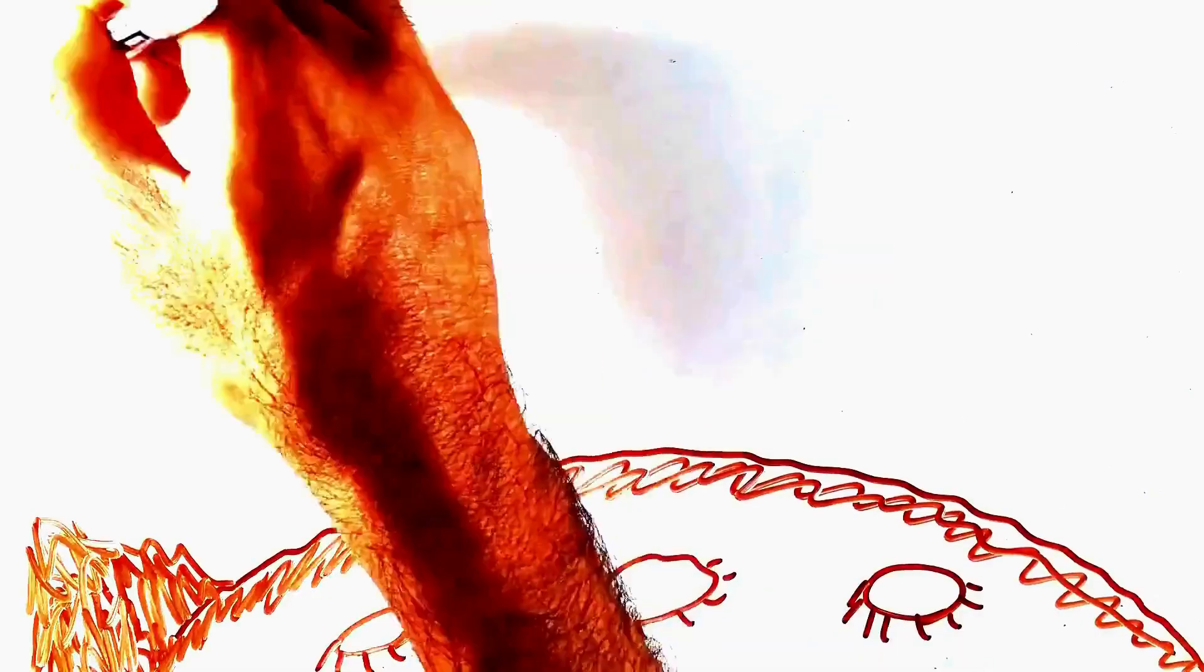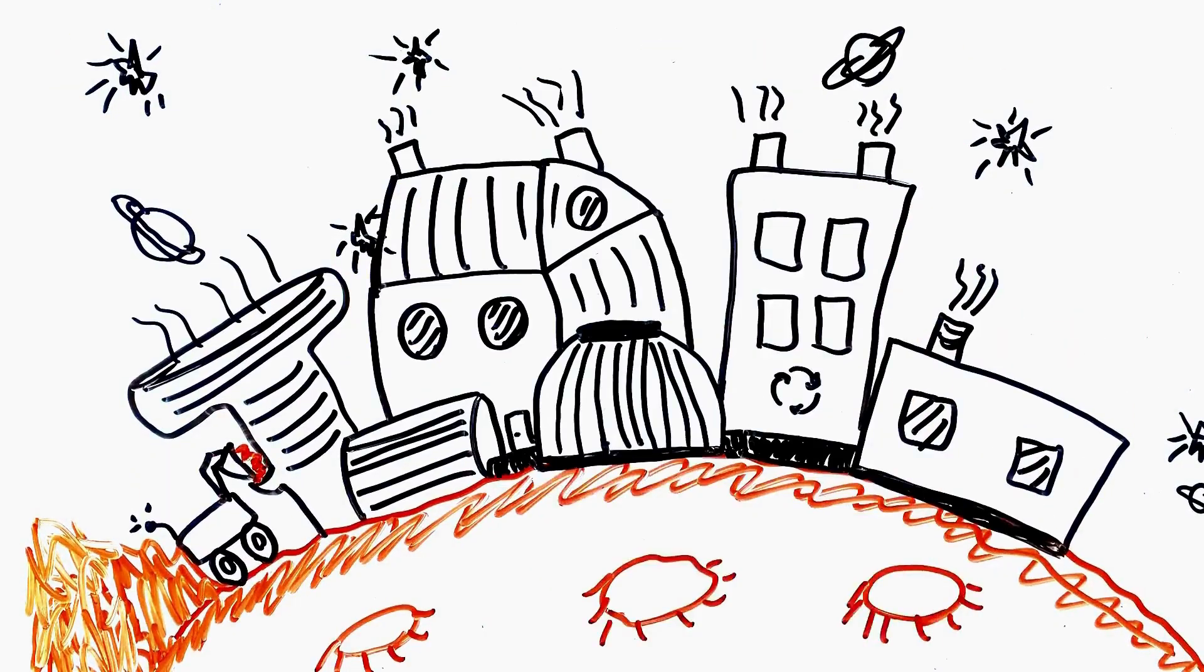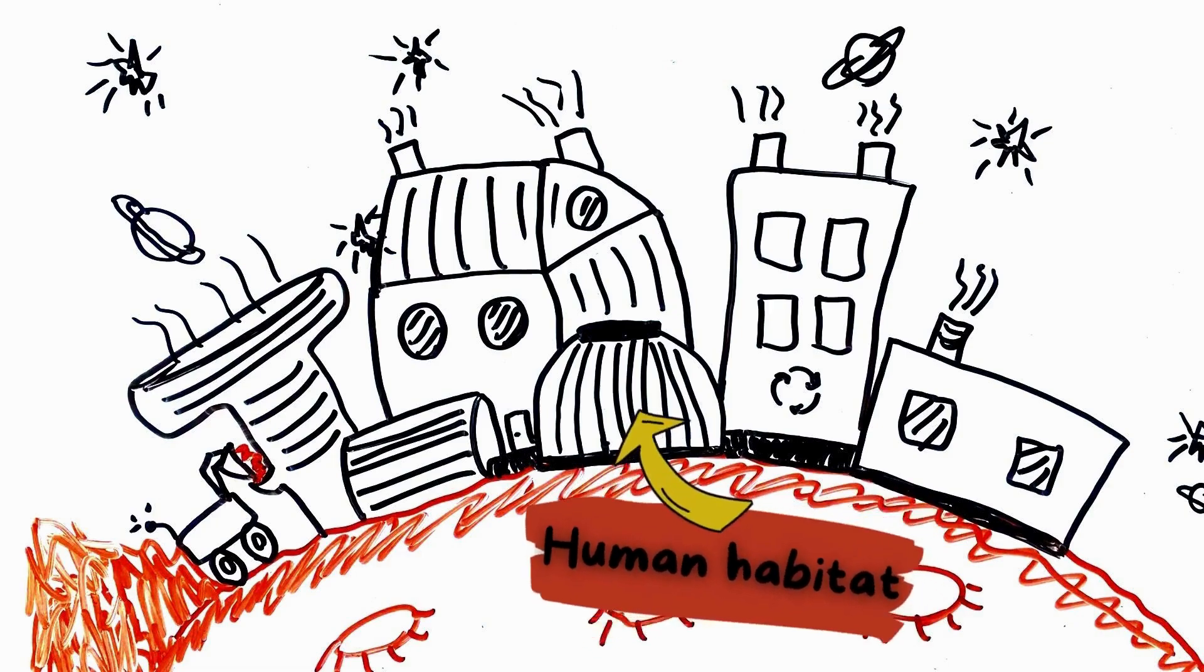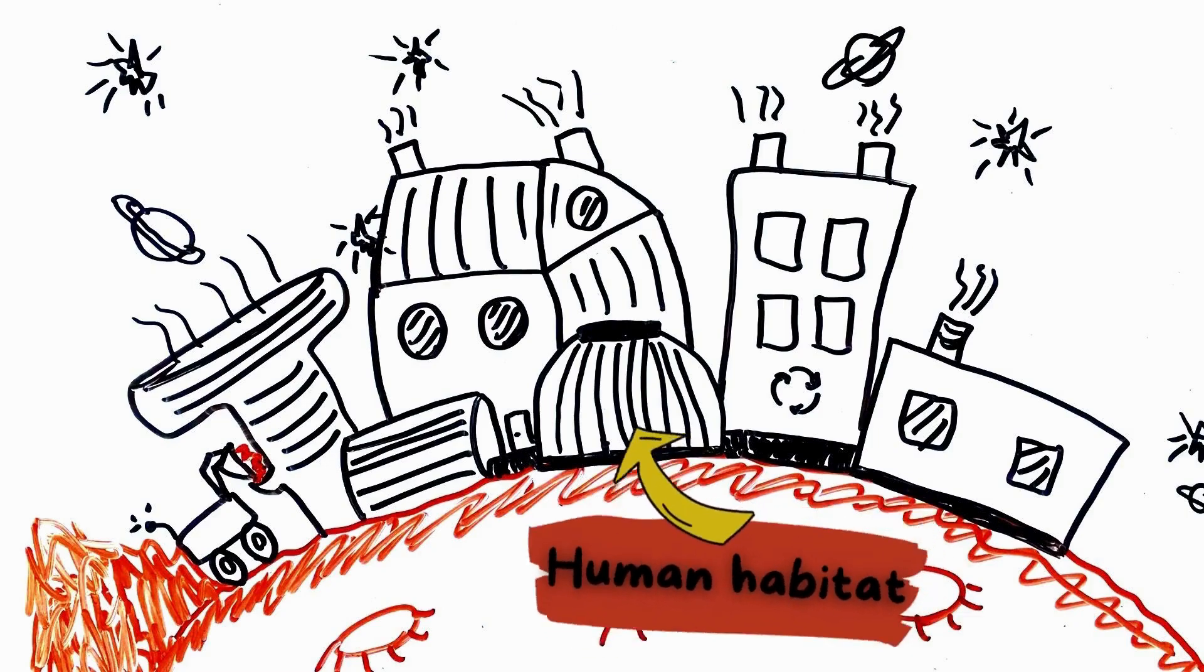There are six essential infrastructures needed to support human colonization on Mars. First, human habitats and laboratories - structures where astronauts can safely live and conduct research.